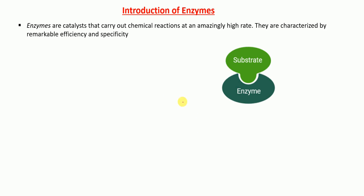Hello everyone. In this lecture today I'm going to talk about what are enzymes, the different classification of enzymes, and what are the tricks and mnemonics to remember different classes of enzymes and the type of reaction they catalyze. Enzymes are catalysts — they carry out chemical reactions at an amazingly high rate, meaning enzymes help to speed up chemical reactions.